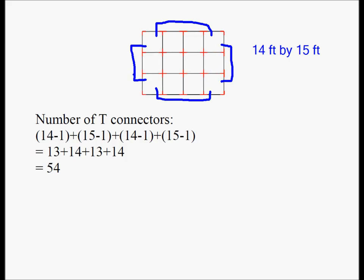Now here you have to think a little bit. If it's 4 units long, you're going to need 3 T connectors on this edge, 3 T connectors on this edge. If this is 3 feet long, you're going to need 2 T connectors on this edge, 2 T connectors on this edge. So if it was 14 by 15, on two of the edges, you're going to need 14 minus 1 T connectors. On the other two edges that are 15 feet, you're going to need 15 minus 1 and 15 minus 1 T connectors.